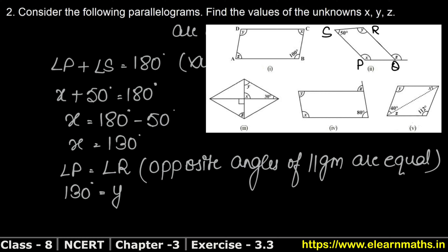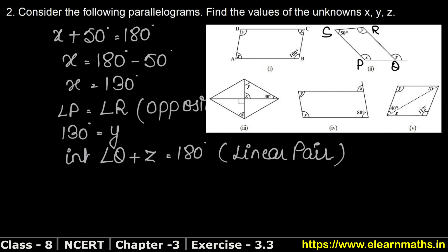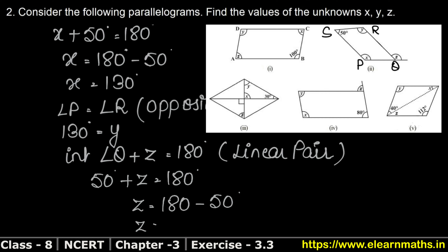Now for x, y, z: this is a straight line at Q, and this angle is z. So interior angle Q plus z equals 180 degrees, because these are linear pair angles, and linear pair angles sum to 180 degrees. Interior angle Q is 50 degrees, so z equals 180 minus 50, giving z equals 130 degrees.